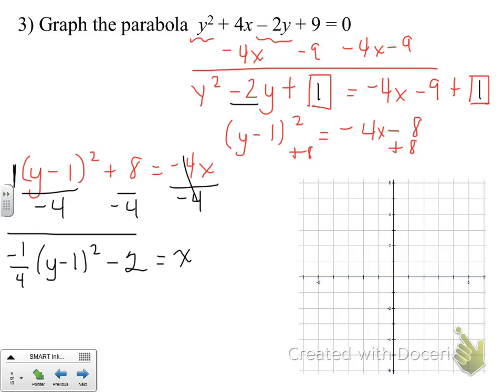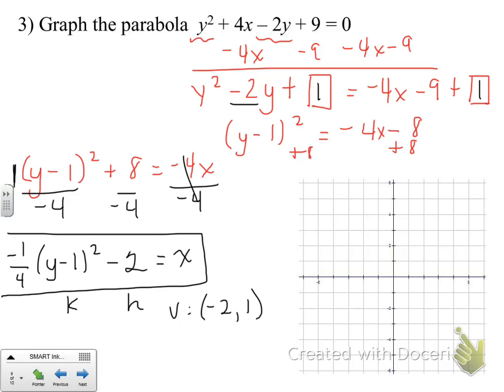That was a little tricky — there was a twist to it. This is our equation now in vertex form. Remember: h is on the outside of the parentheses, k is inside paired with y, and h is always paired with x. So our vertex is at (-2, 1).